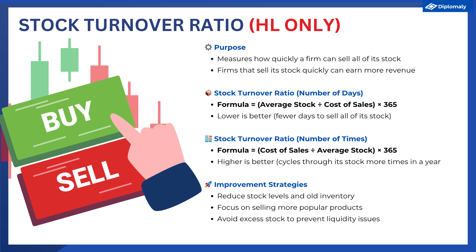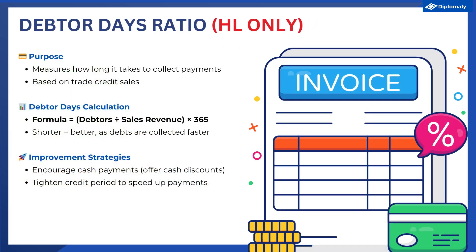Remember that term from the previous video on liquidity ratios. As a result, this can cause working capital challenges for the business, and we'll go into more detail on this concept in Unit 3.7, which is the next topic. The next ratio is the debtor days ratio. This calculates the average number of days it takes a business to collect on its debts, typically from customers who have bought goods and services on trade credit but have not paid the business back yet.